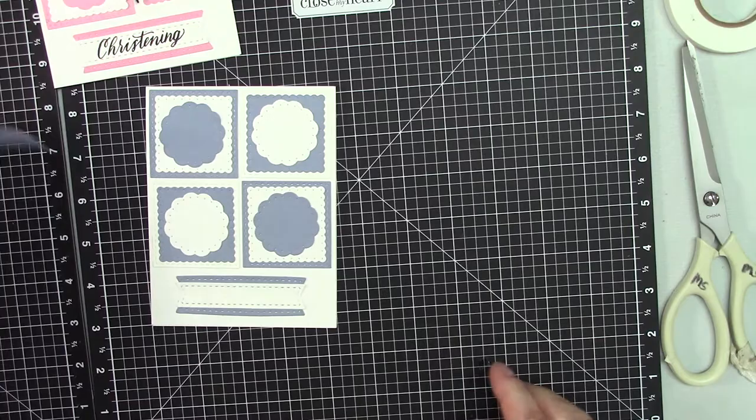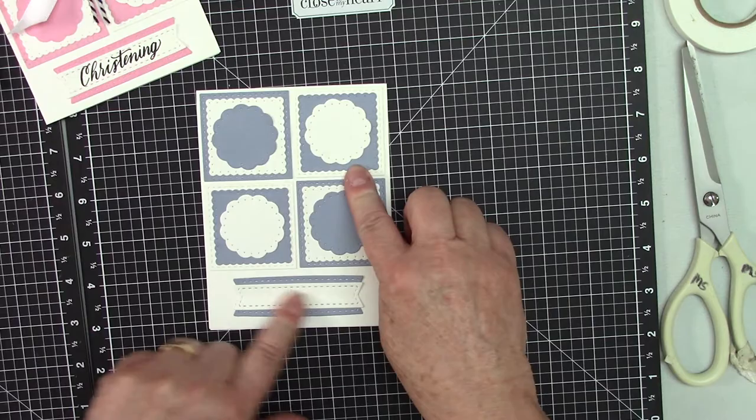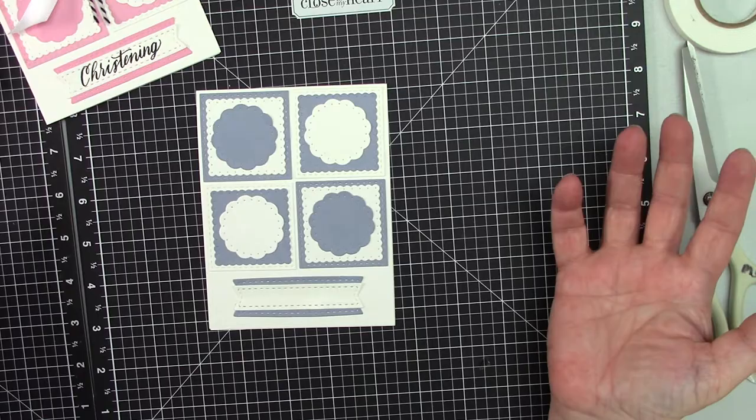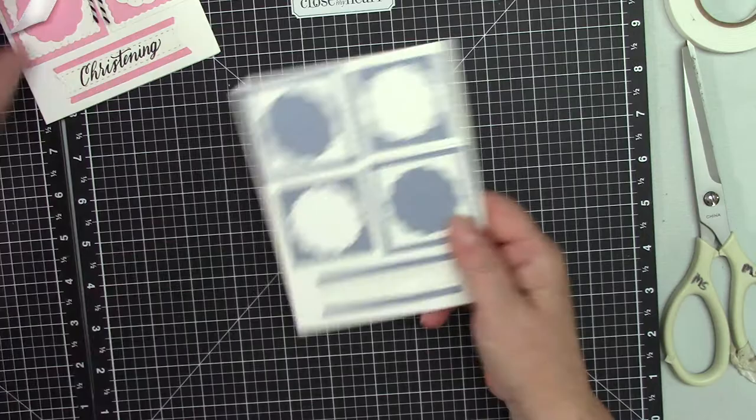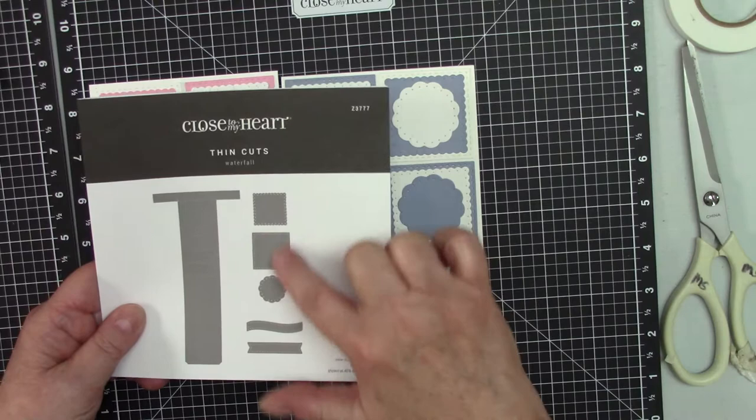I'm not going to put a ribbon in here because I'm not sure. But that's it. How long did it take me to do this? Like I don't know, five minutes maybe. But I just thought I'd let you know you can use this waterfall die and just use the squares and create a beautiful, fast, elegant card. Thank you so much for watching. Bye now.